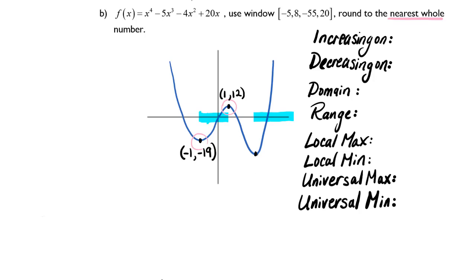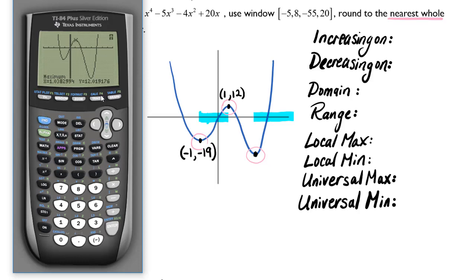And now I'm curious about this last minimum. This is going to be my universal minimum, because if you look at this graph, it is the very lowest point. Second, calc, minimum, I have to arrow down to three which is the minimum. I need to find a left bound, so I'm going to get fairly close to this minimum. Hit enter.